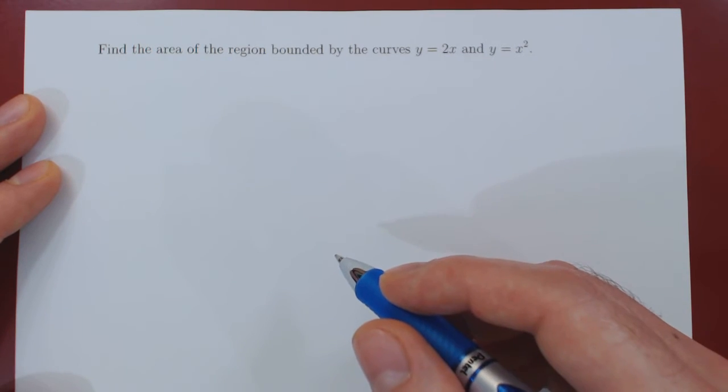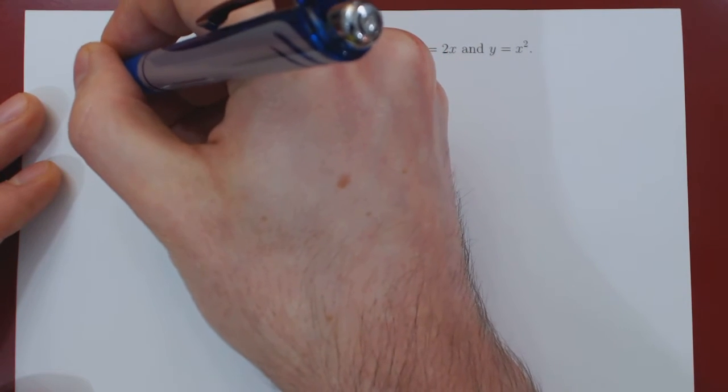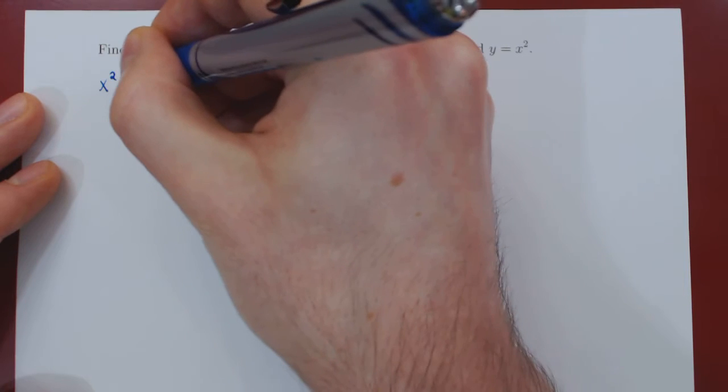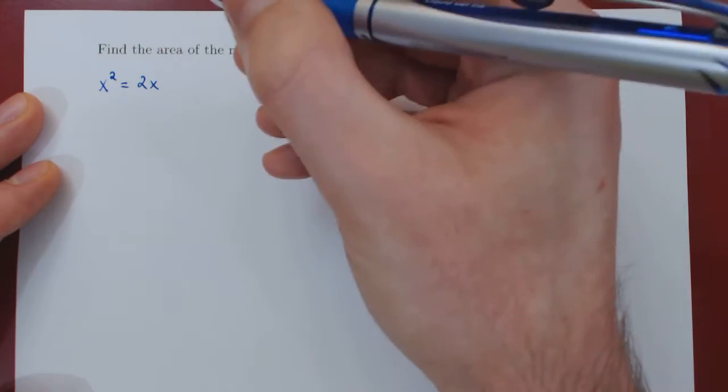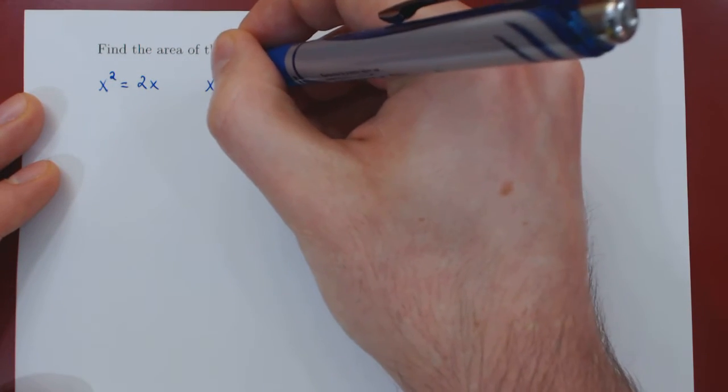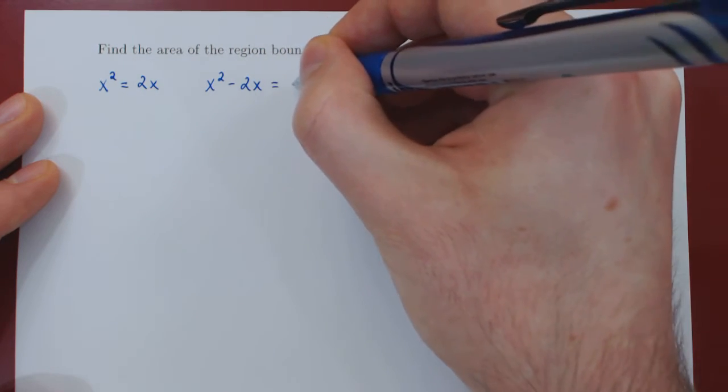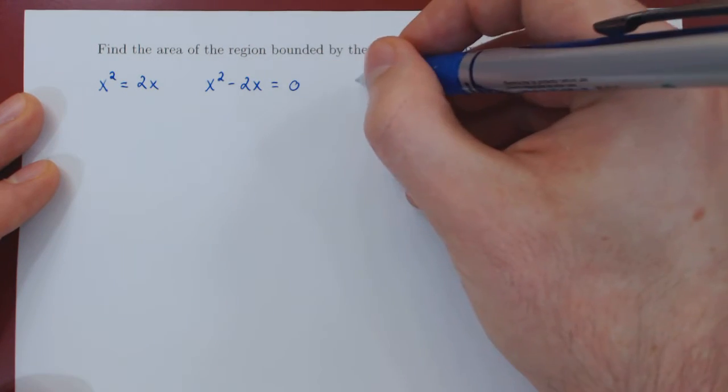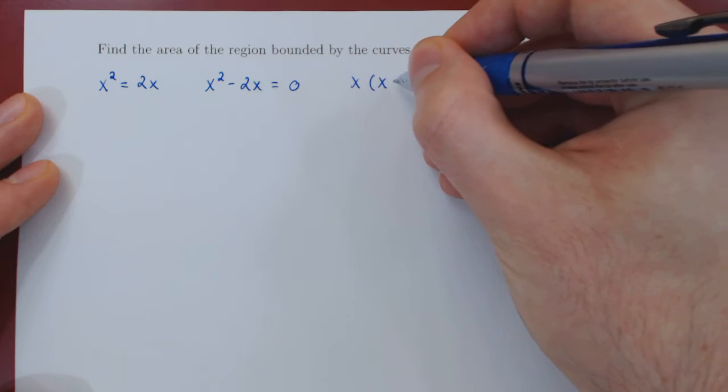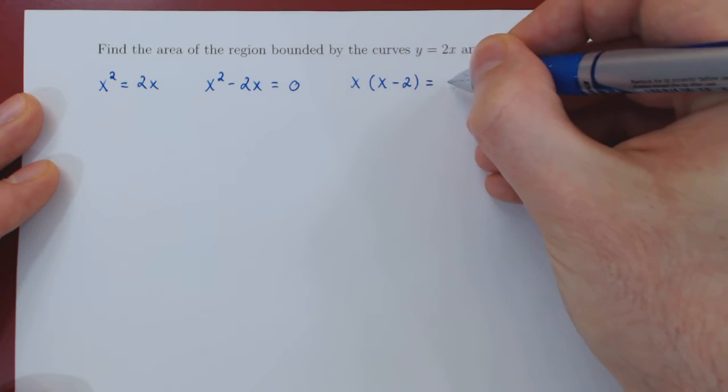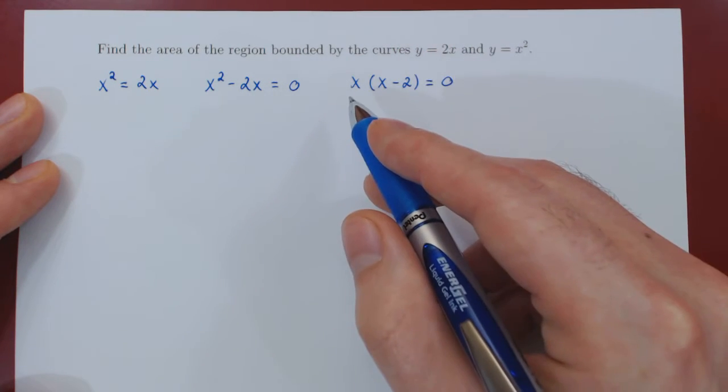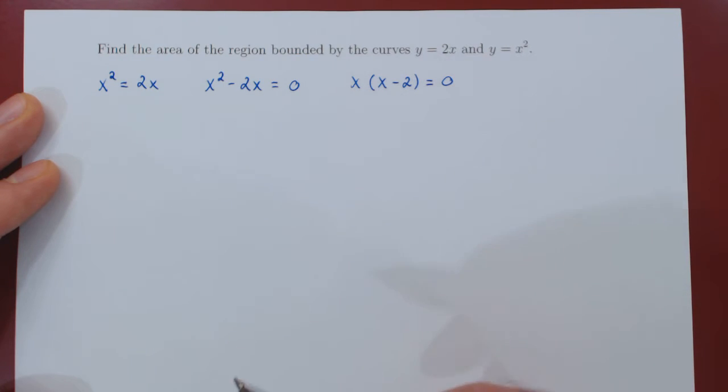So let us first find the points of intersection. We equate x squared to 2x, subtract 2x on both sides, and now it becomes a simple factoring problem. Factor x. So the solutions are clearly x equals 0 and x equals 2.